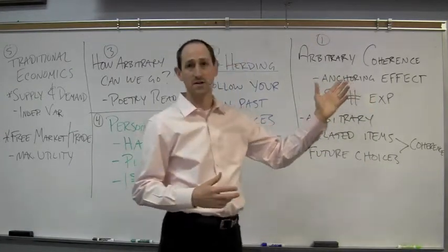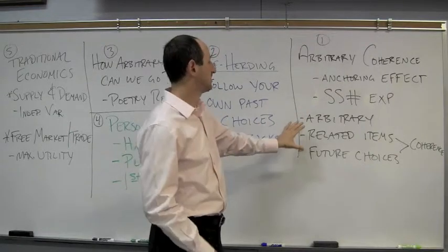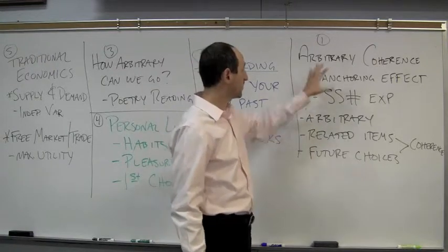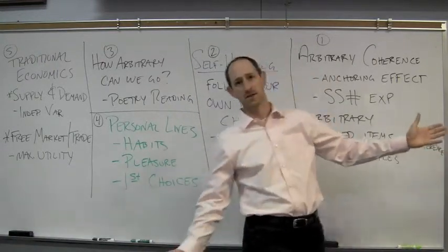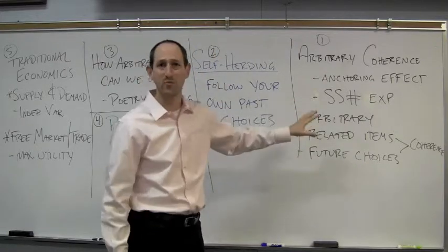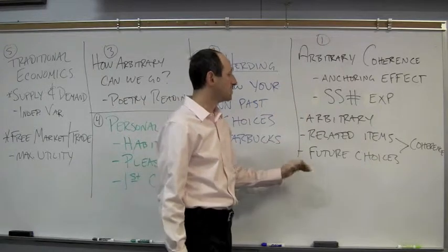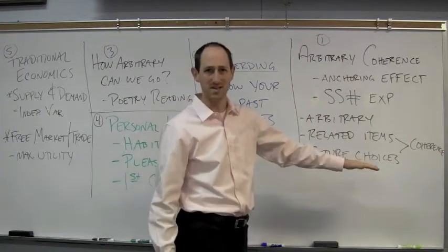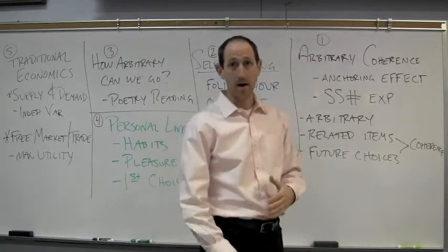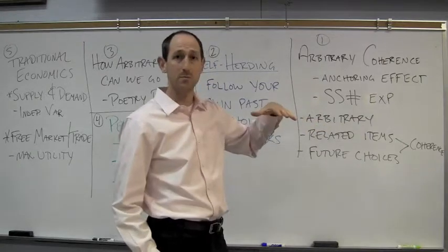The second thing arbitrary coherence shows is that once we have an anchor on a set of prices, that price coheres — which is why it's called coherence. We tend to pay similar prices for items we relate to each other in our minds, and we tend to make all our future choices based on this anchor.